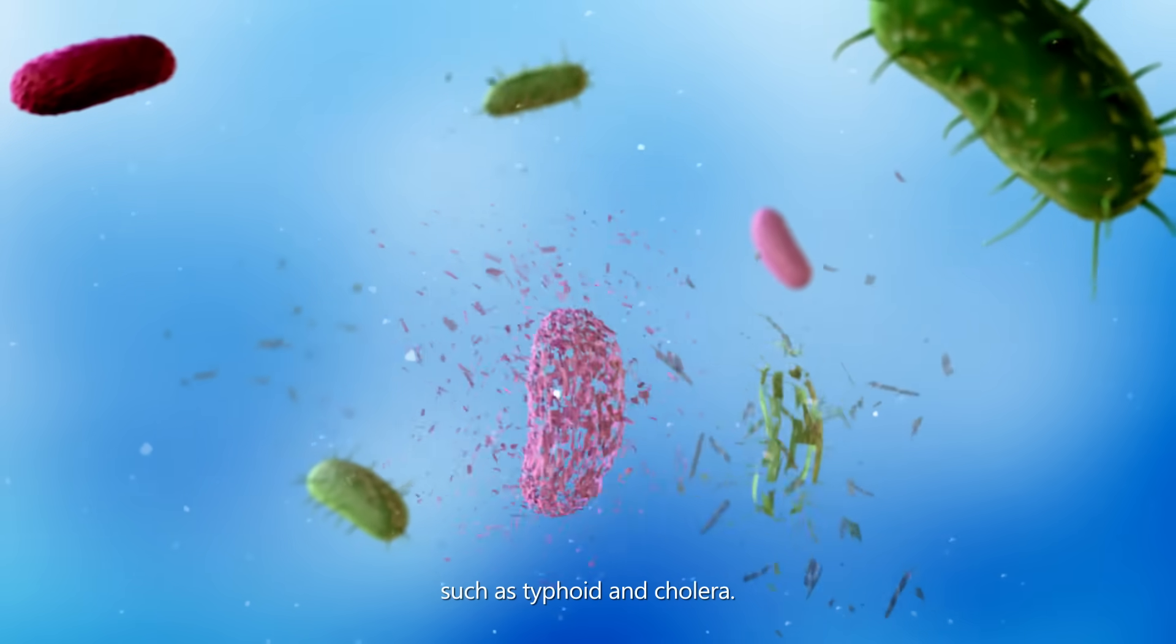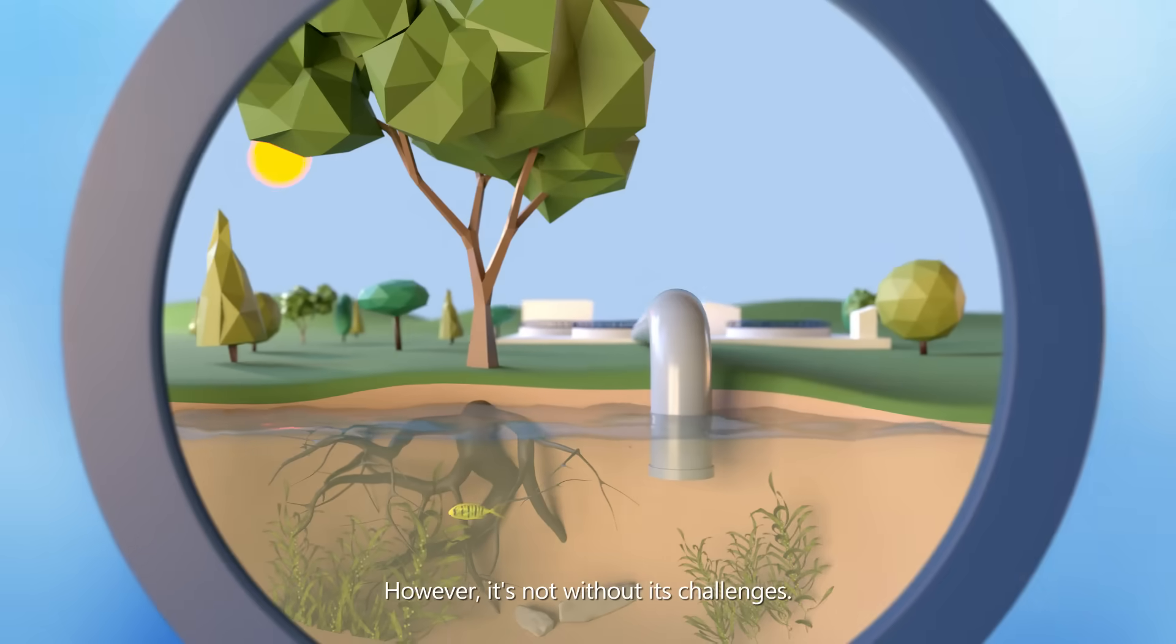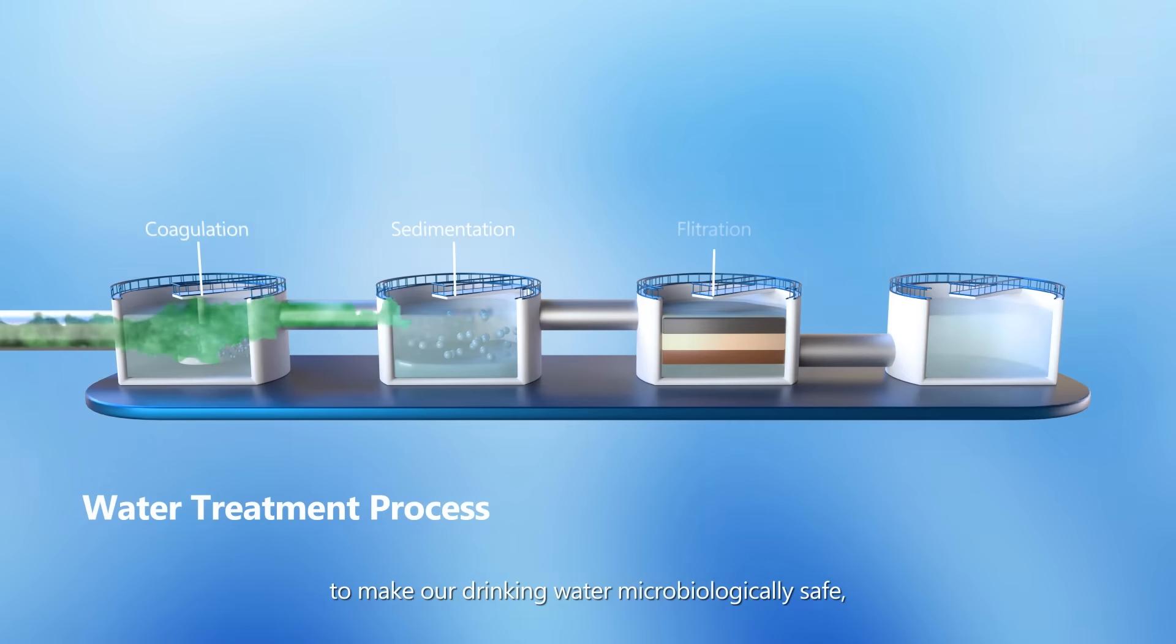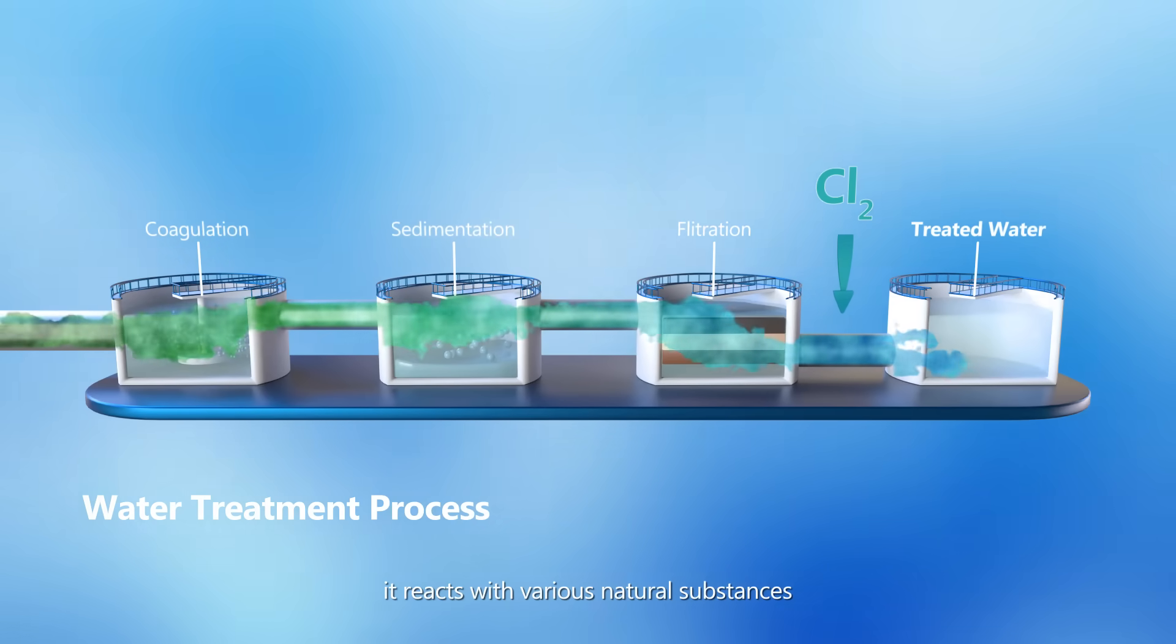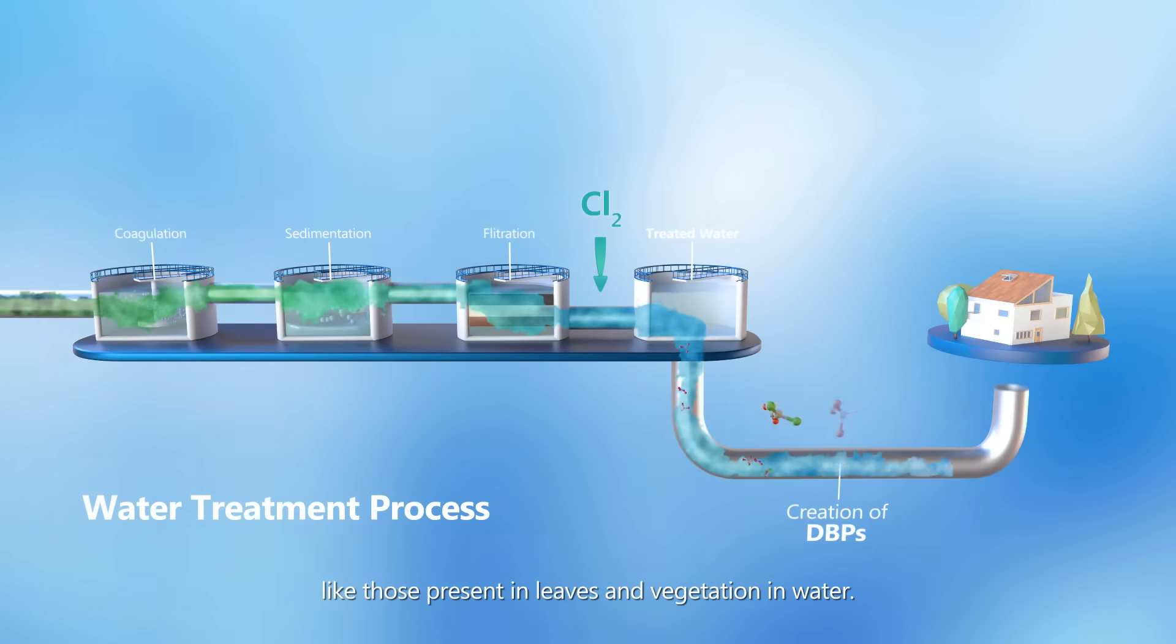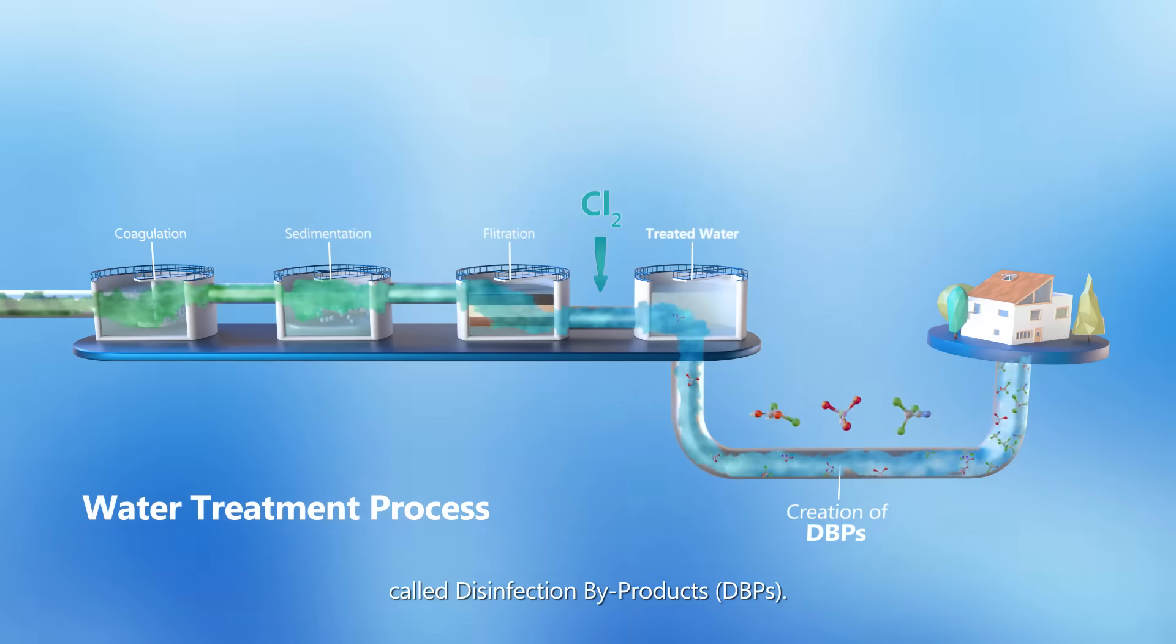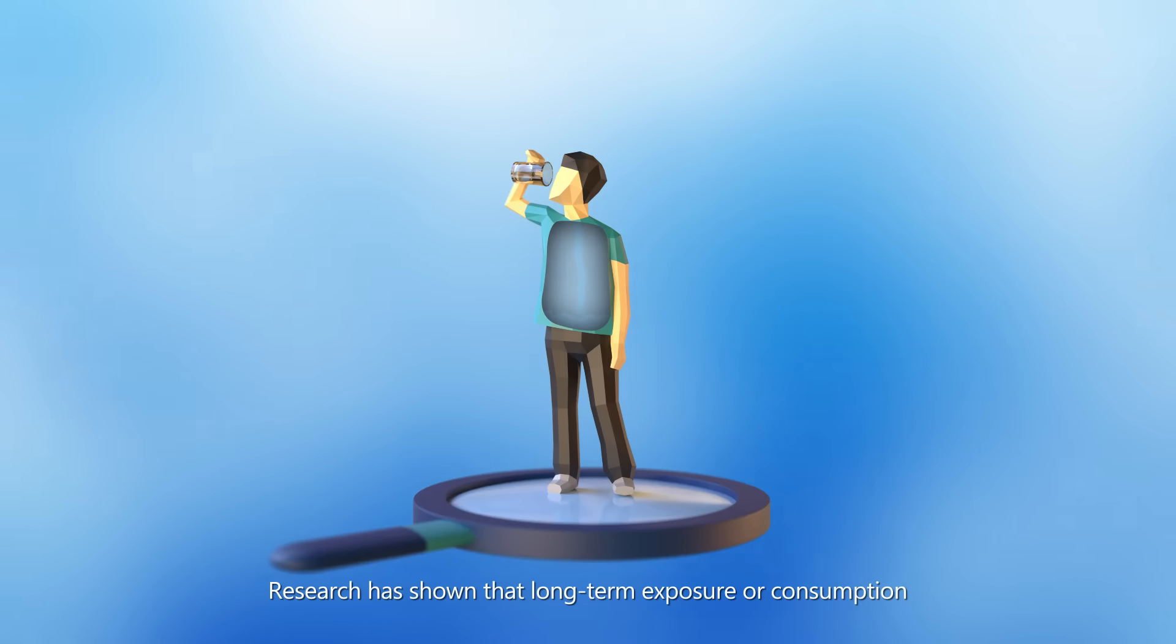However, it's not without added challenges. When we use chlorine or other chemical disinfectants to make our drinking water microbiologically safe, it reacts with various natural substances like those present in leaves and vegetation in water. This reaction creates chemical compounds called disinfection byproducts (DBPs).